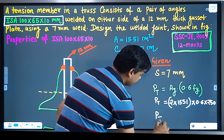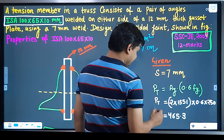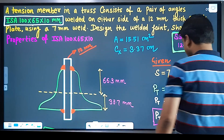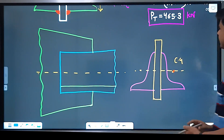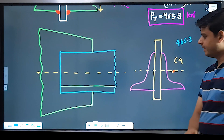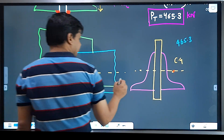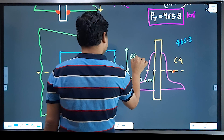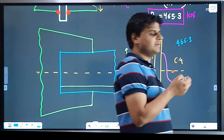The result is 465.3 kN. So the tension member carrying capacity is 465.3 kN. From the section properties, the CG distances are 33.7 mm from one face and 66.3 mm from the other face of the angle section.